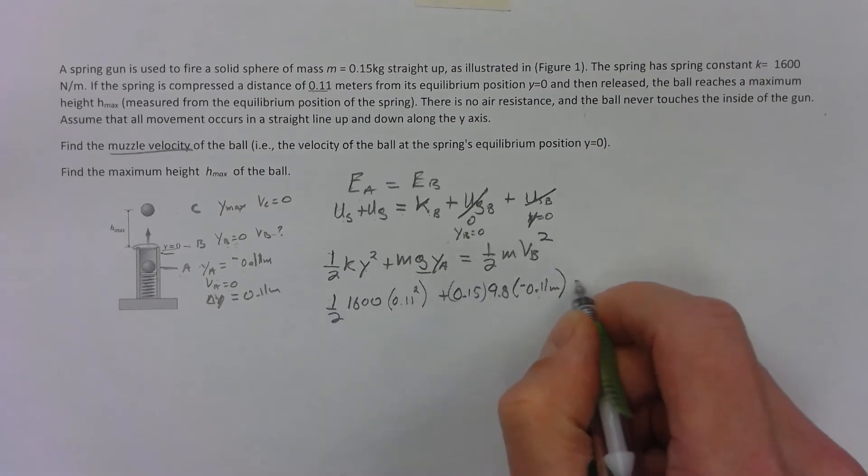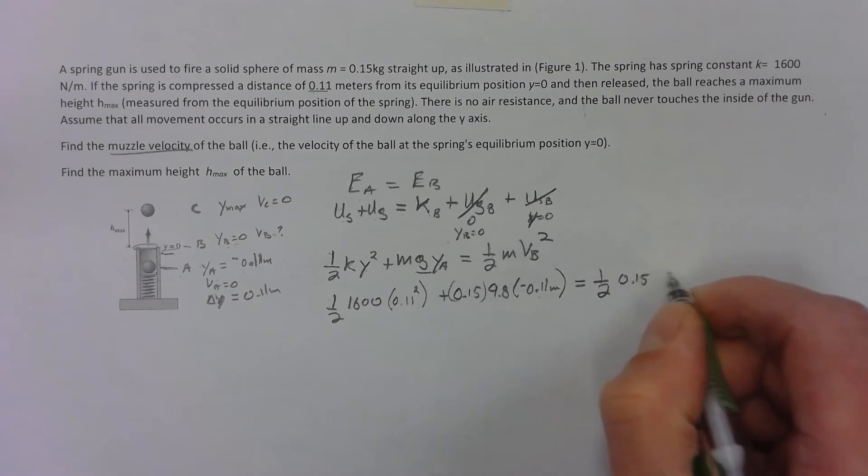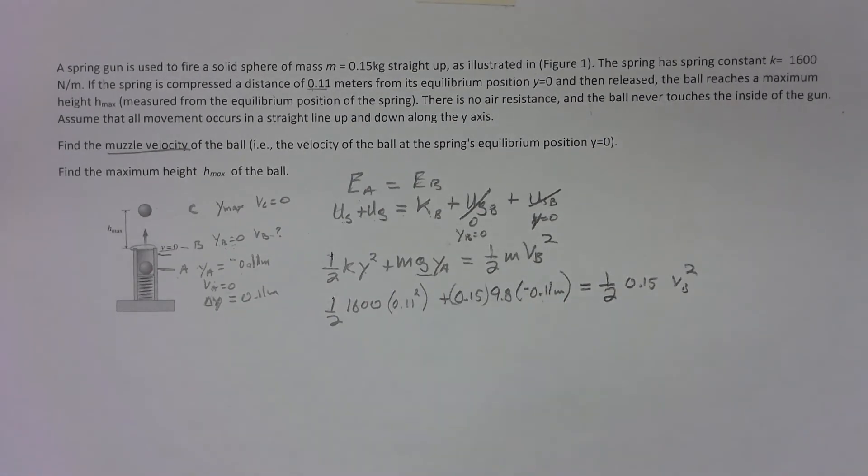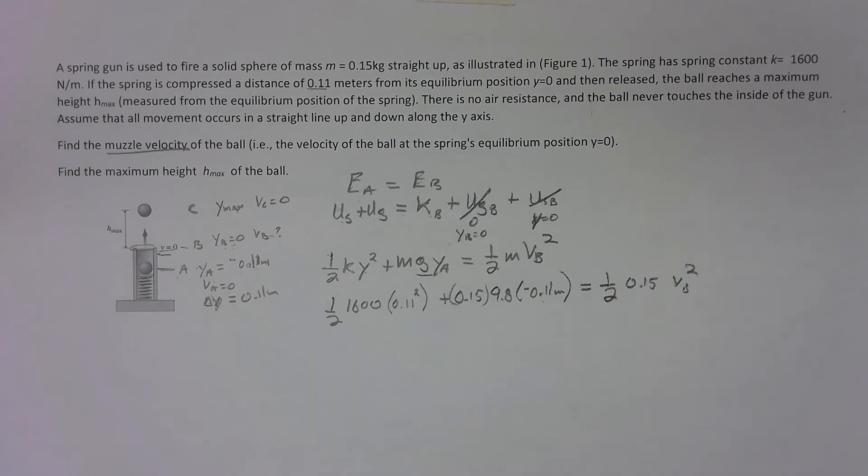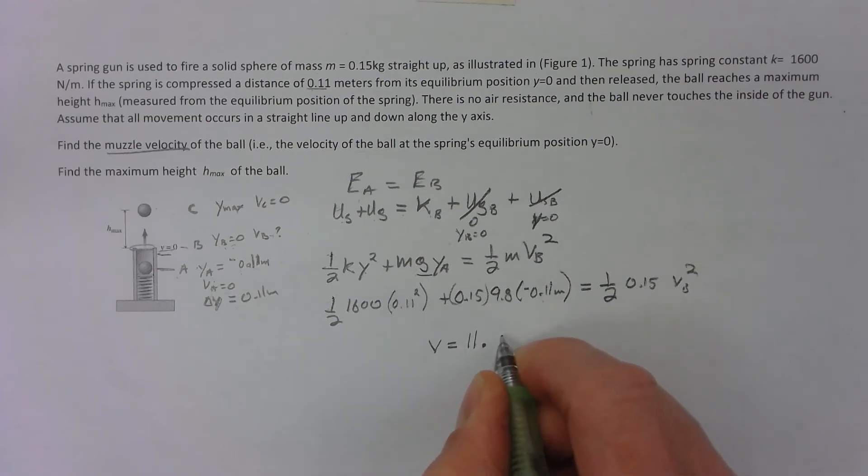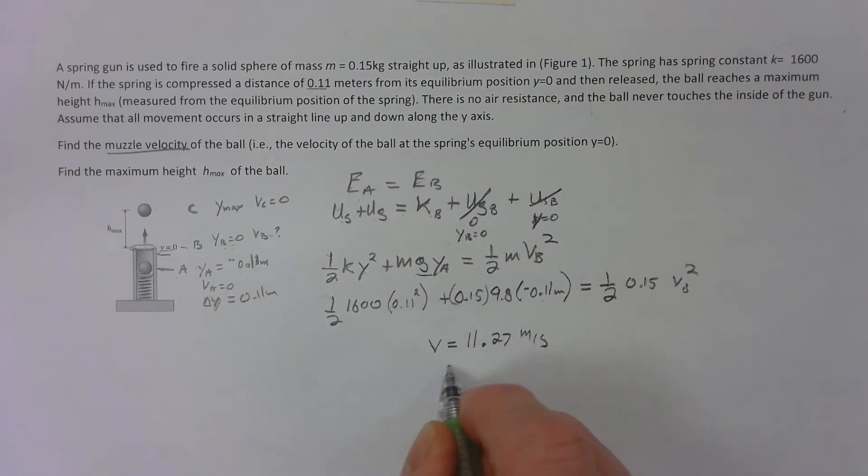And that's one half of 0.15 times v squared, v at b. Now we just do some algebra, plug that into our equation, and we plug that into our calculator and we get an answer. The velocity is 11.27, we've got two significant digits, so 11 meters per second is how fast that's going.